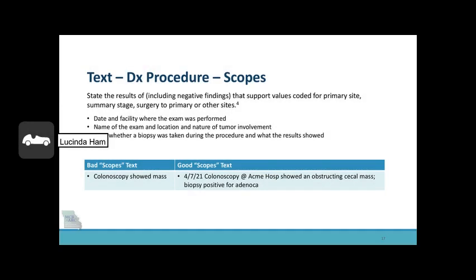What should you document when a scope is performed? State the results including negative findings that support values coded for the primary site, summary stage, and surgery to primary or other sites. Please also include the date and facility where the exam was performed, name of the exam and location and nature of tumor involvement, and note whether a biopsy was taken during that procedure and what the results showed. An example of bad text just shows a colonoscopy showed a mass, while the good text shows the date, the type of procedure, where it was performed, and what the results were.